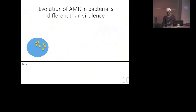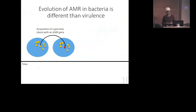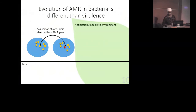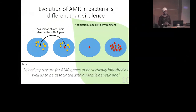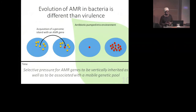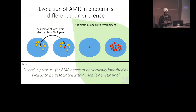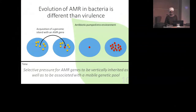So what is this telling us about the evolution of antimicrobial resistance? Going back to our example: the red microbe acquires a resistance gene. When exposed to an antibiotic, only the red microbe will survive and replicate. But any microbes where that genomic island pops out will probably die. So there's a lot of selective pressure for these resistance genes to be vertically inherited and to stay in that genome, as well as to be associated with the mobile genetic pool.